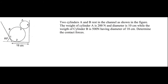The weight of cylinder A is 200 Newton and its diameter is 10 centimeters, while the weight of cylinder B is 500 Newton with a diameter of 18 centimeters. Our aim is to determine the contact forces at points 1, 2, 3, and 4 as shown in the figure.